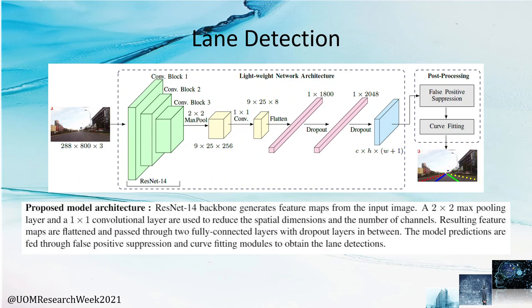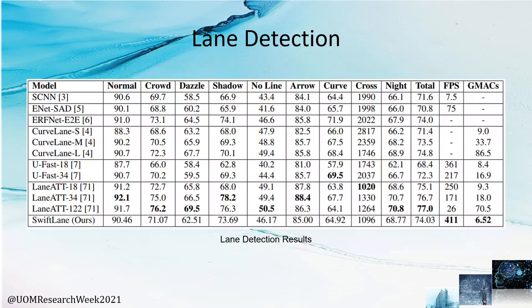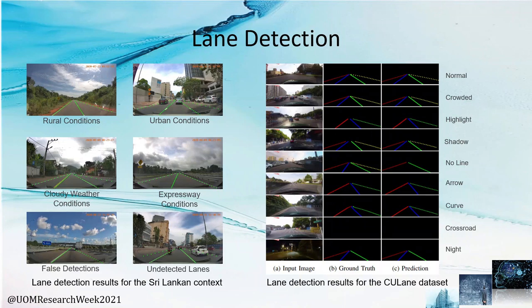With respect to lane detection, we follow the row-wise classification approach in which the goal is to identify the lane locations as grid cells in each row anchor. We propose a novel lightweight lane detection model and two post-processing techniques: a false-positive suppression algorithm and a curve-fitting algorithm as shown in the diagram. The model is trained and implemented using PyTorch. The results from the QLANE benchmark dataset are compared with state-of-the-art lane detectors. Our formulation surpasses state-of-the-art in terms of speed and efficiency, reaching up to 411 FPS while achieving a comparable F1 score of 74%. Qualitative results are shown for Sri Lankan content and the nine categories in the QLANE dataset.